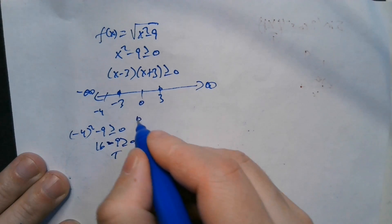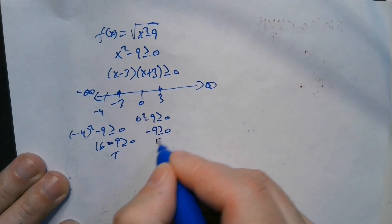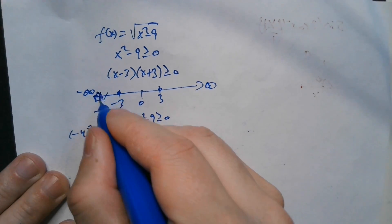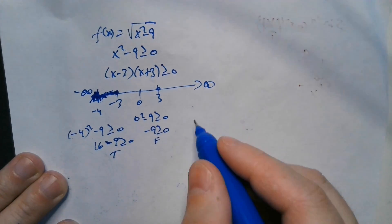Choose 0 from here. So 0 squared minus 9 greater than or equal to 0. Negative 9 greater than or equal to 0. That's false. So so far, this part of it is okay. Negative infinity up to negative 3 here. I'm just trying to shade that.